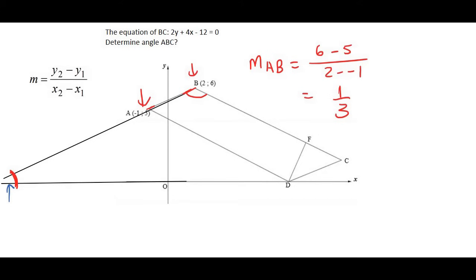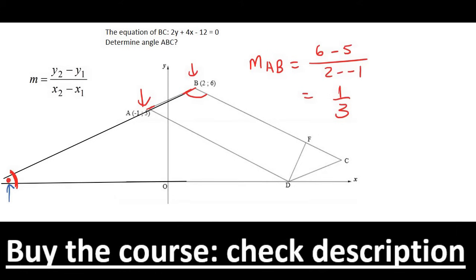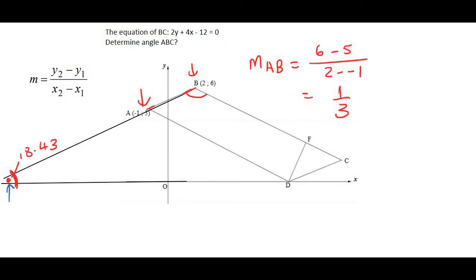Now we can work out the angle over here by saying shift tan of a third. And that's going to give us 18.43 degrees.